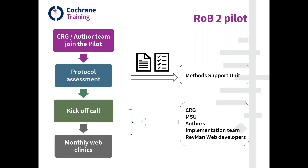The focus of the pilot is on new reviews, generally those at the protocol stage, and we recommend teams come forward when putting together their protocol. However, teams further along in the process can still join. Typically, a CRG will approach the pilot via their network associate editor when they receive their first protocol or review using RoB 2, and the method support unit will provide comments and feedback on the RoB 2 methods in that protocol.